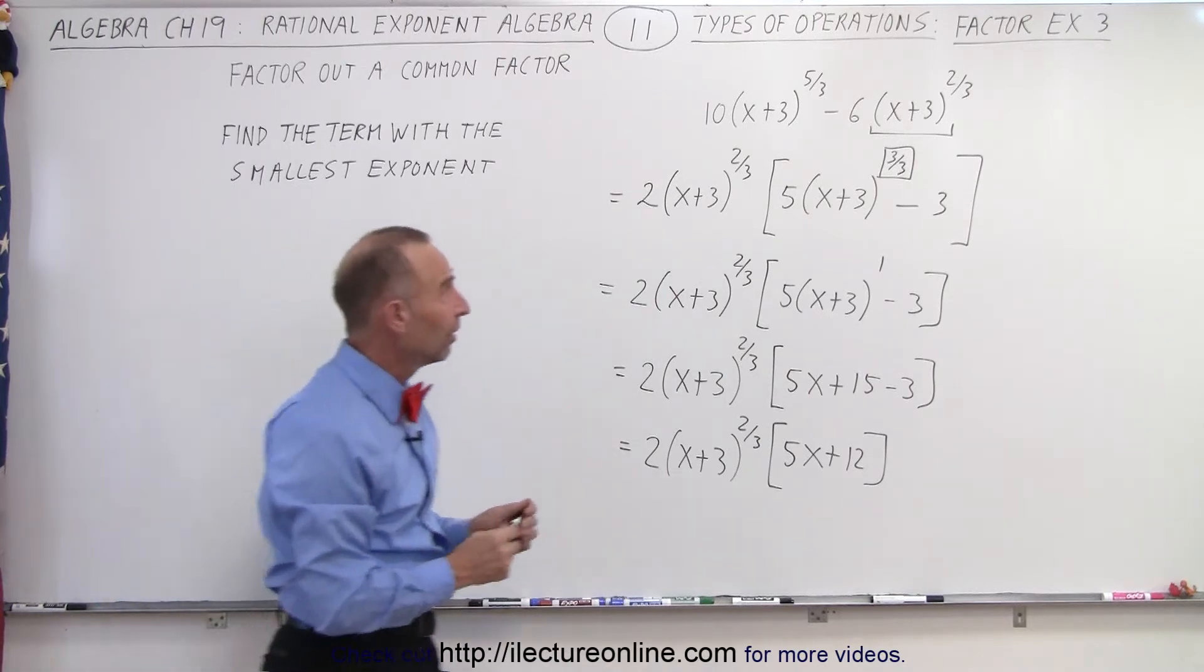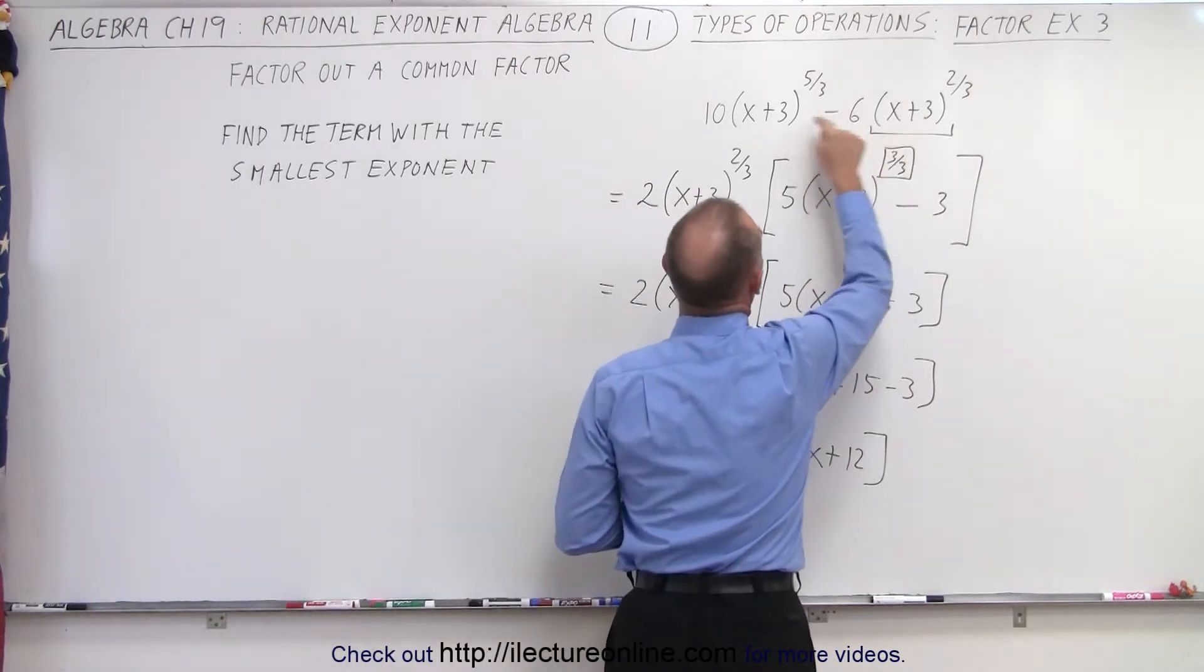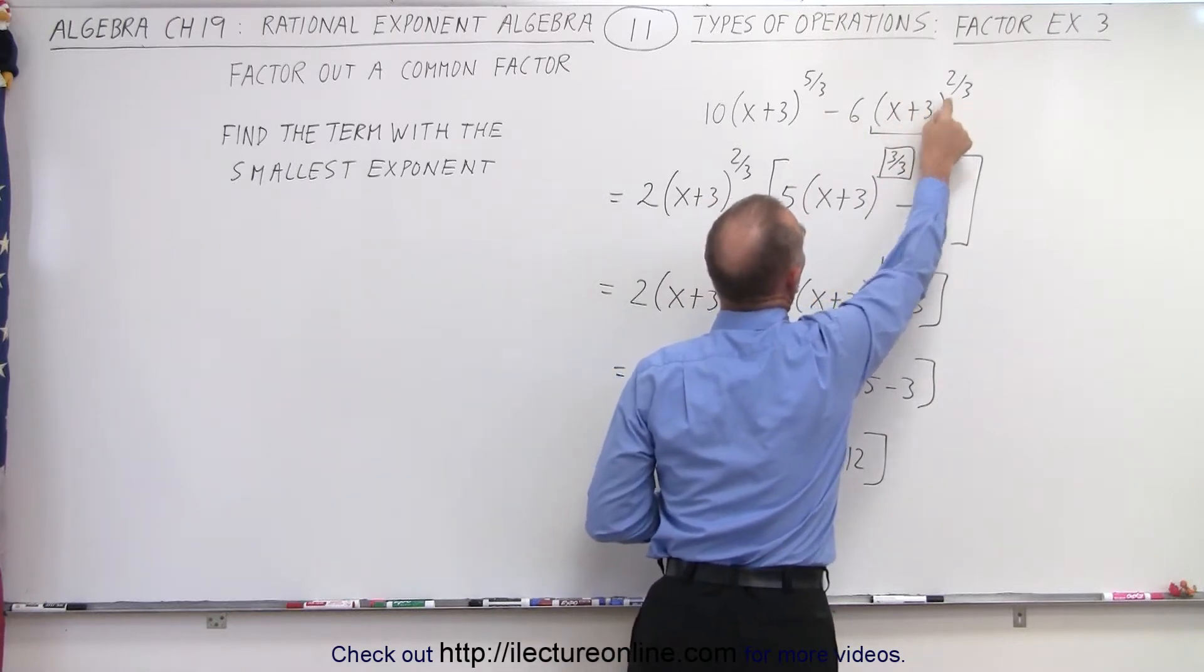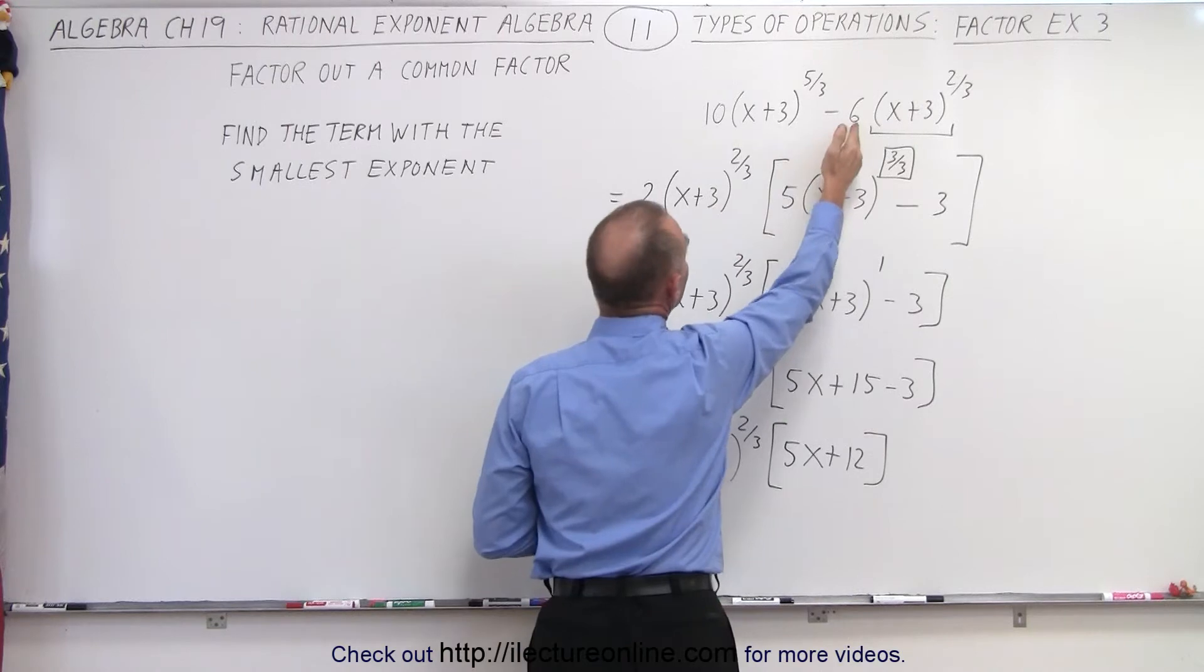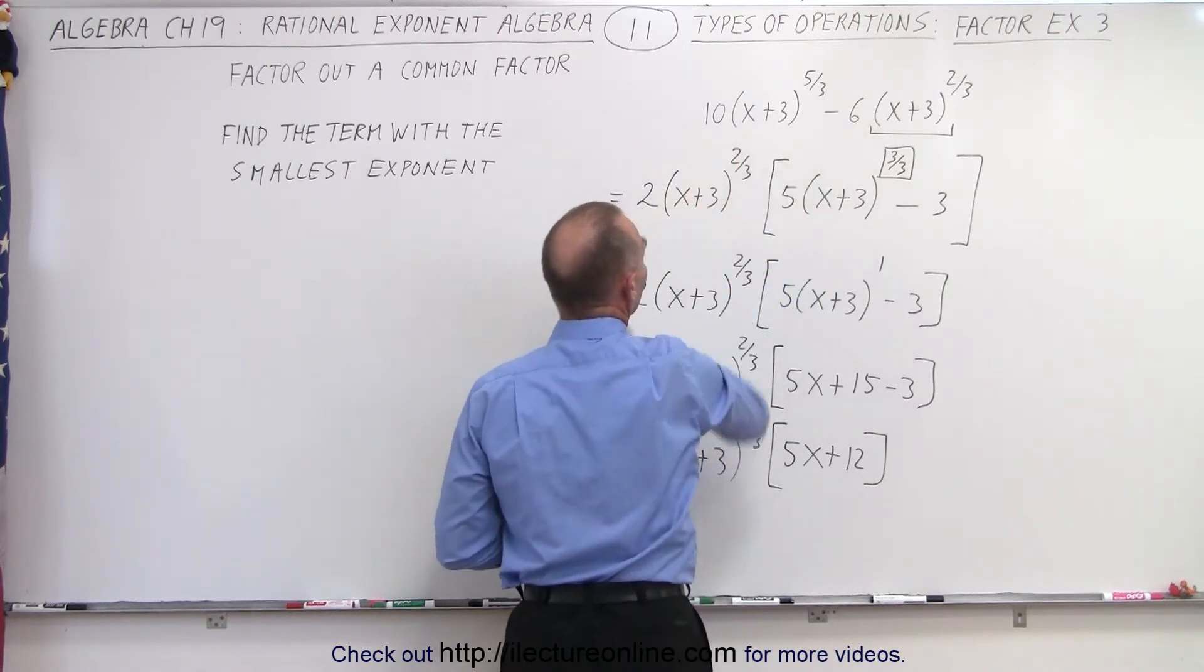Again, the rule is: find the term that has the smallest exponent, which is (x+3)^(2/3). Factor that out, along with any constants you can factor out, in this case 2.